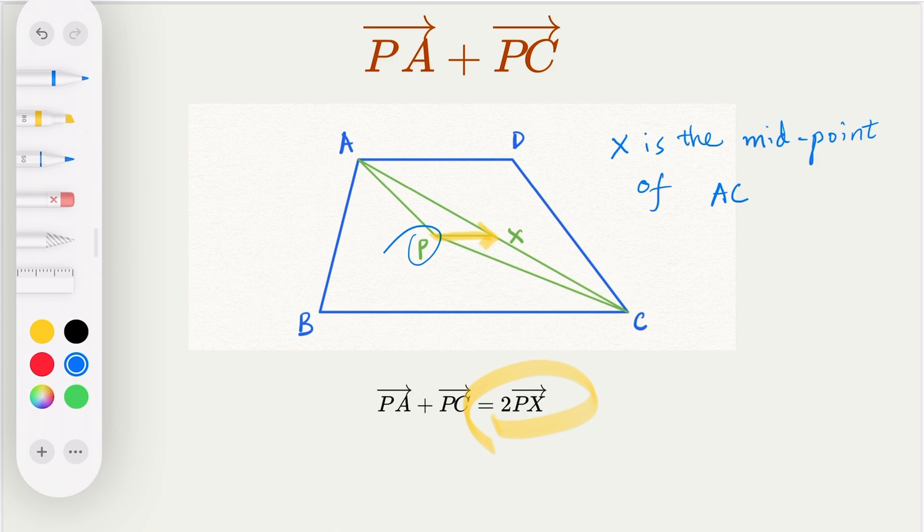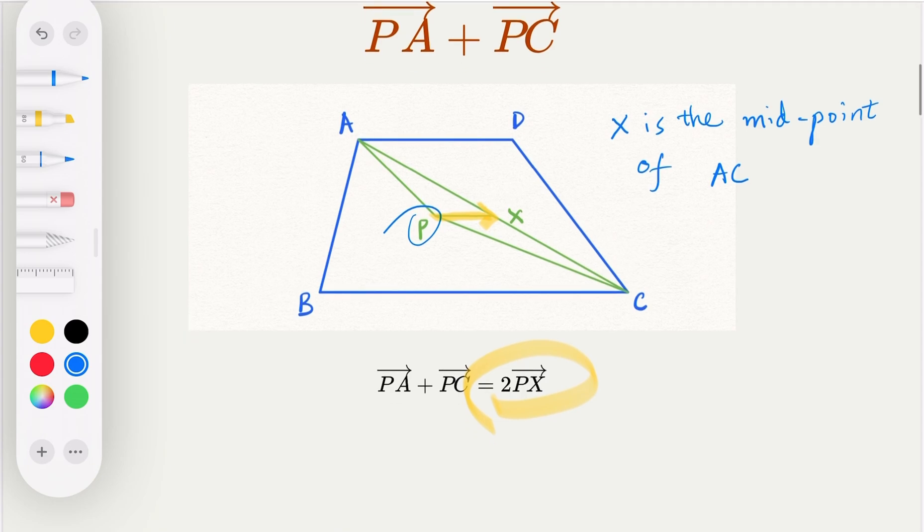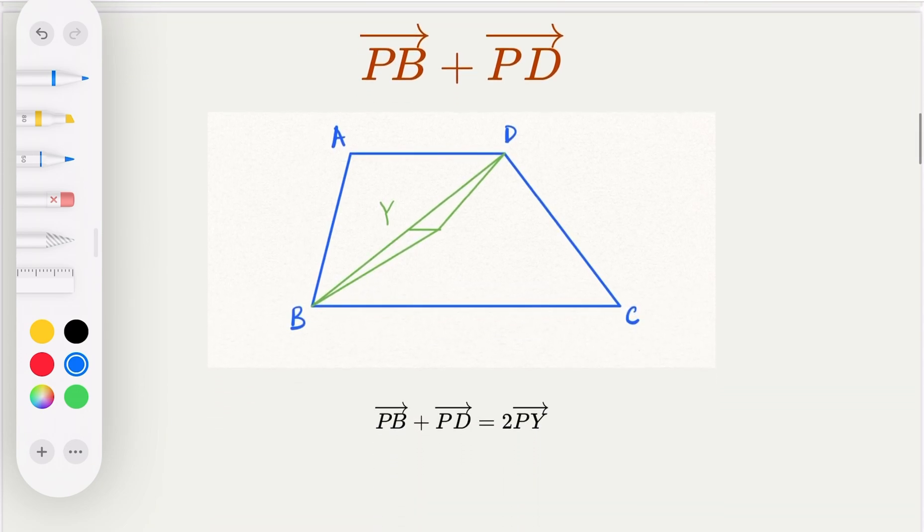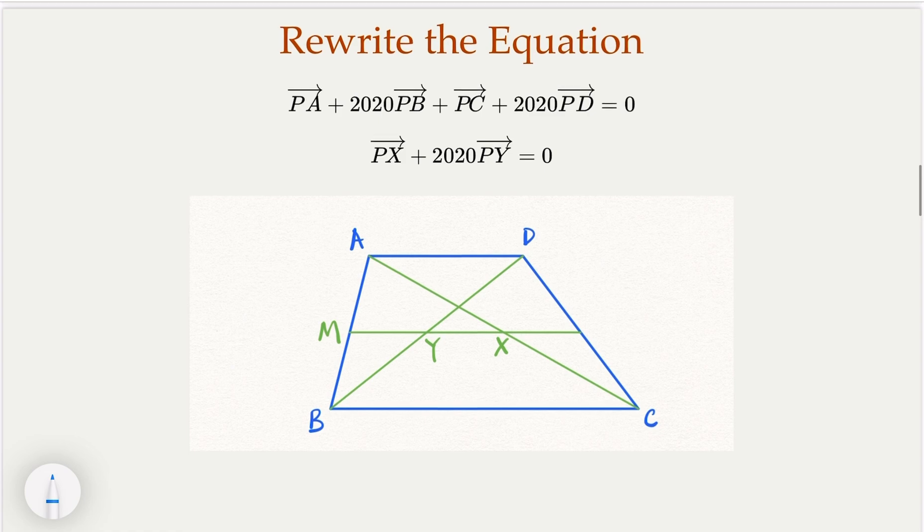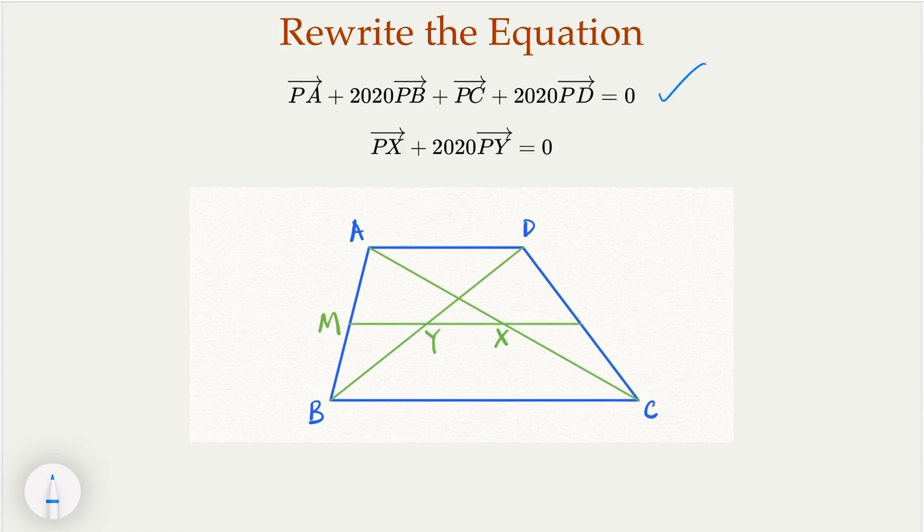Now similarly, P, B and P, D. So again, if the point here is P, I claim that the addition is actually this vector here. This vector is going to be twice the summation, twice of PY. So once we have that, we're going to apply to the problem equation.